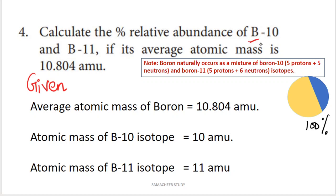What is B10? Boron has two isotopes. The first isotope is boron-10, which means 5 protons and 5 neutrons. B11 has 5 protons and 6 neutrons. In both cases, the atomic number is the same but the mass is different.